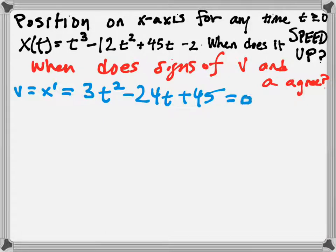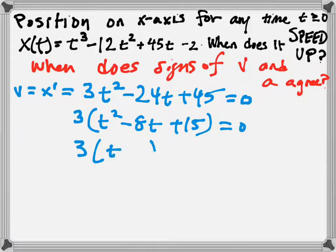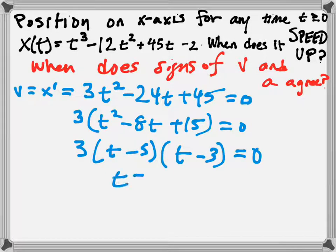We're going to find the roots, which will allow us to make a sign chart. So generically, these are called critical numbers, but here these happen to be when the object is at rest. If we factor out 3, we end up with this. We need a positive 15 and a negative 8, so both of our signs will be negative. It will be negative 5 and negative 3, which implies that our object is at rest at 3 and at 5.